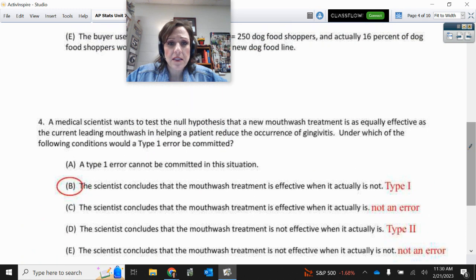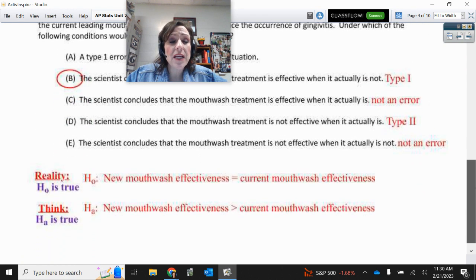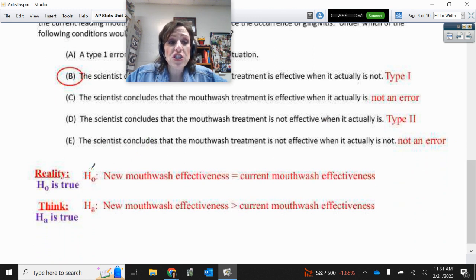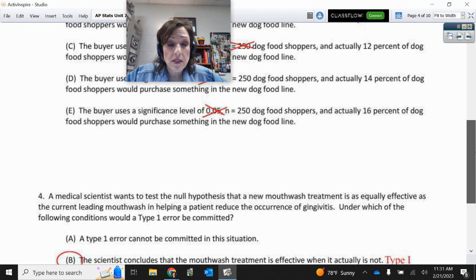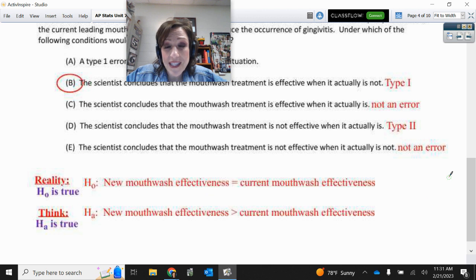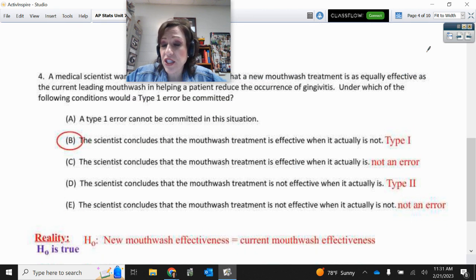Here, what is a Type I error? Type I error might help you to think of what the null and alternative is. The null is nothing happening, the new and the old are the same. The alternative is yes, the new is better. So remember, power would be detecting the new is better if it really is. Type I error, if the null is really true but we get a sample that makes us reject it. Hey girl, I shouldn't have rejected you, I must have committed a Type I error. So that is the scientists conclude that the mouthwash is more effective when it really wasn't. Hey girl, I should not have rejected you but I did.